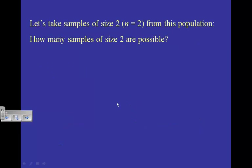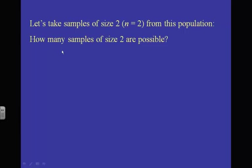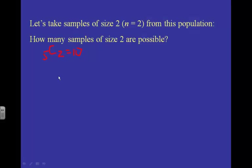What if I take a bunch of samples of size 2 from this population? How many samples of size 2 are possible? If I have 5 fish and I'm picking out 2, that means I should do 5C2. Using your calculator, you would figure out that there are 10 possibilities — 10 different samples of size 2.